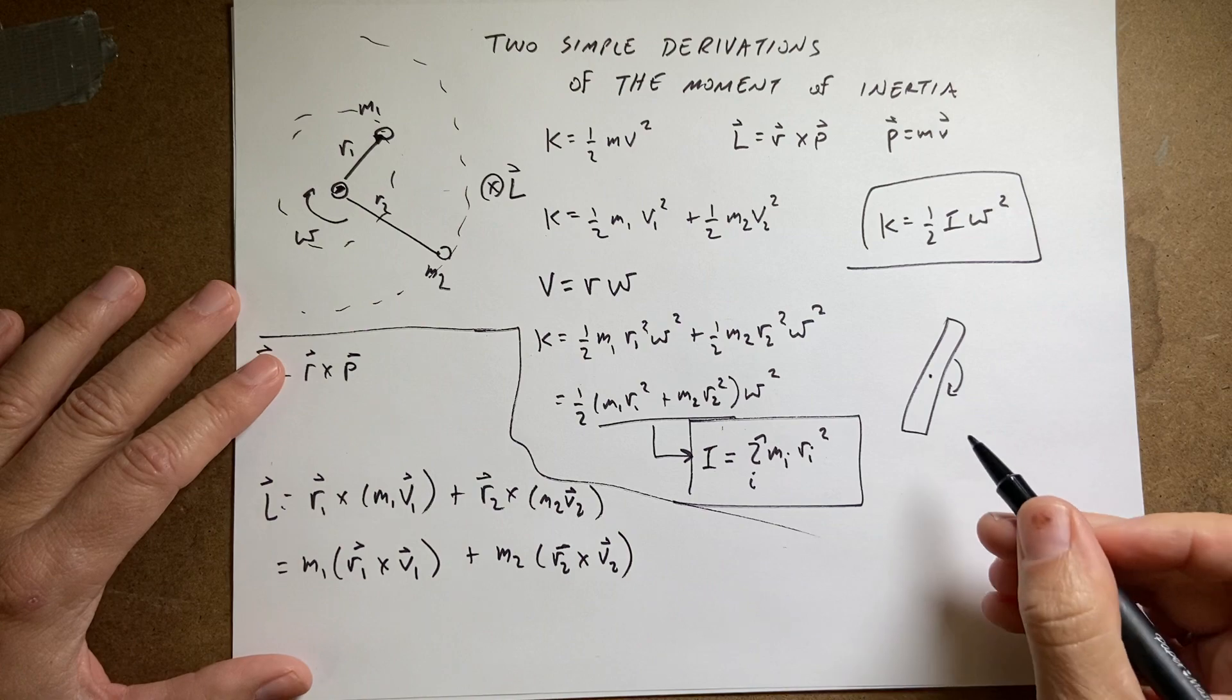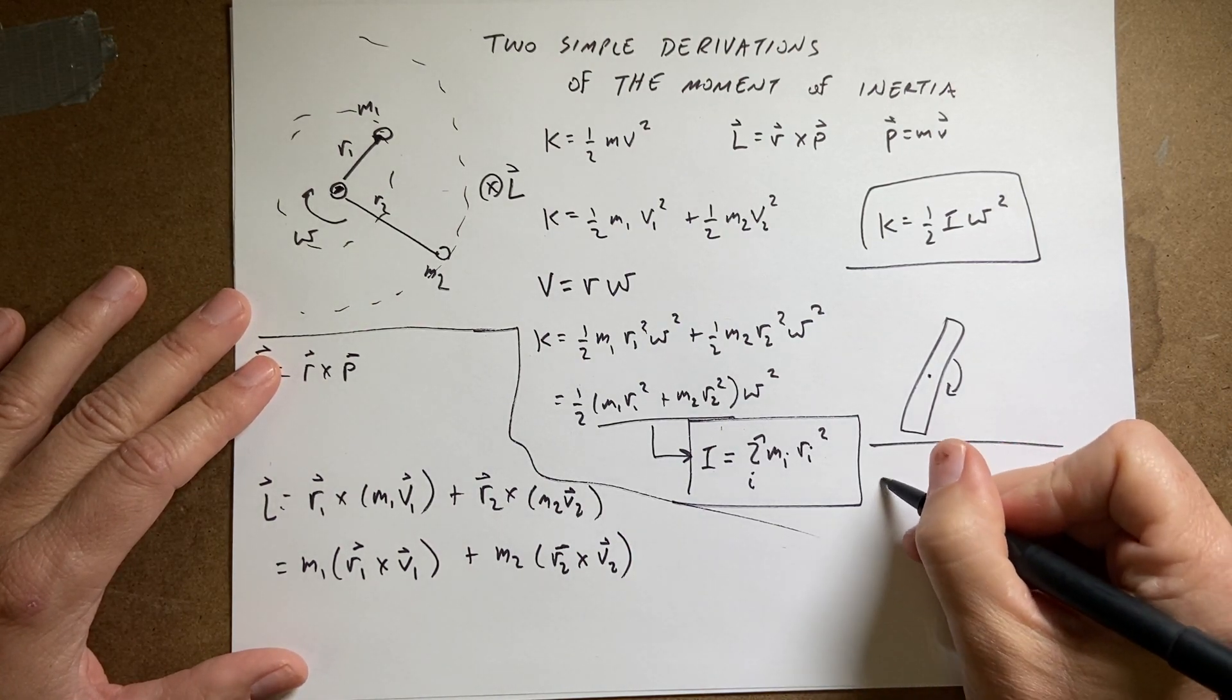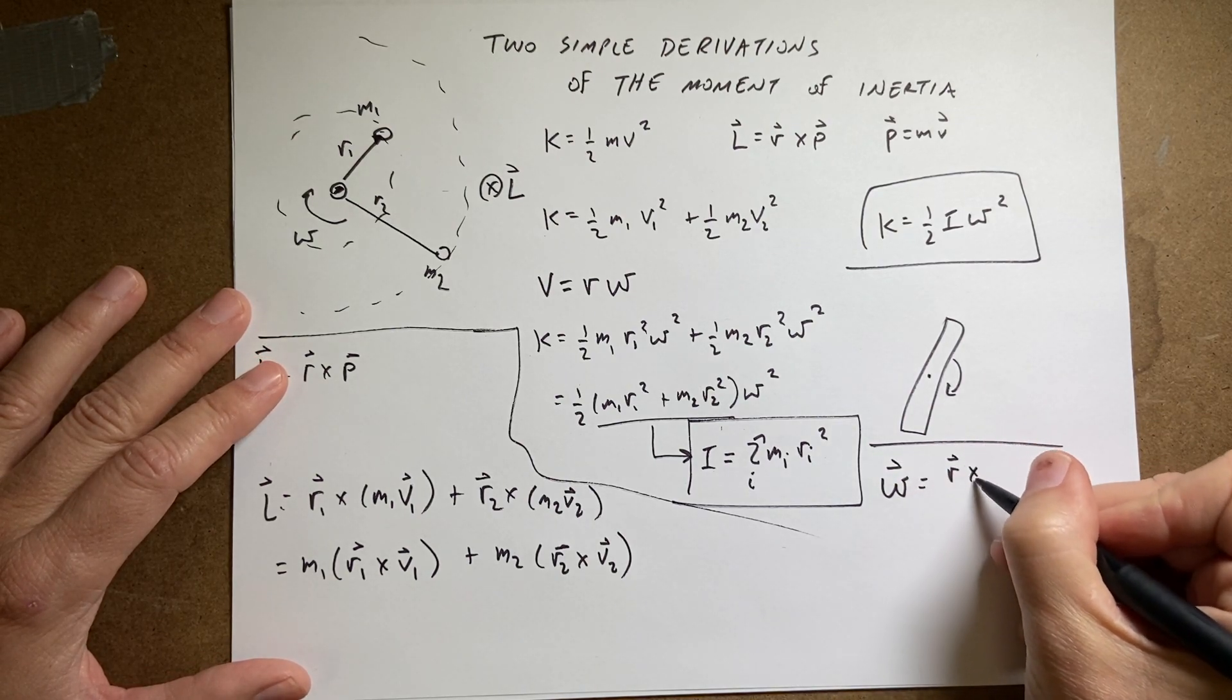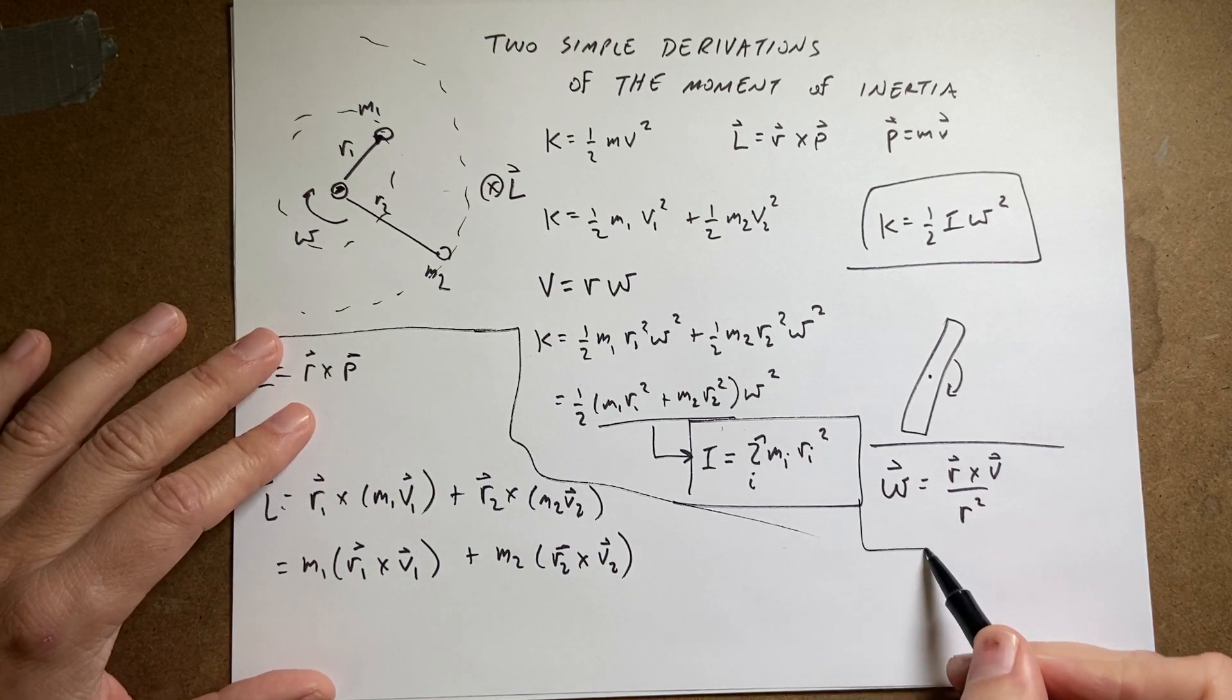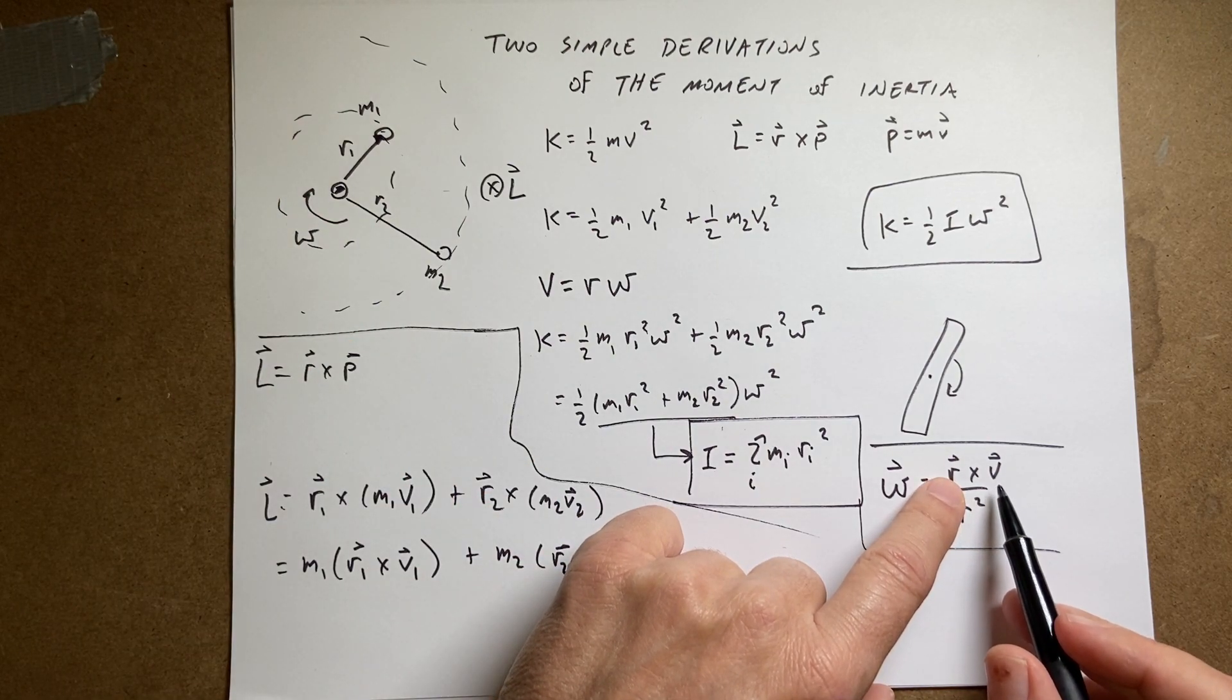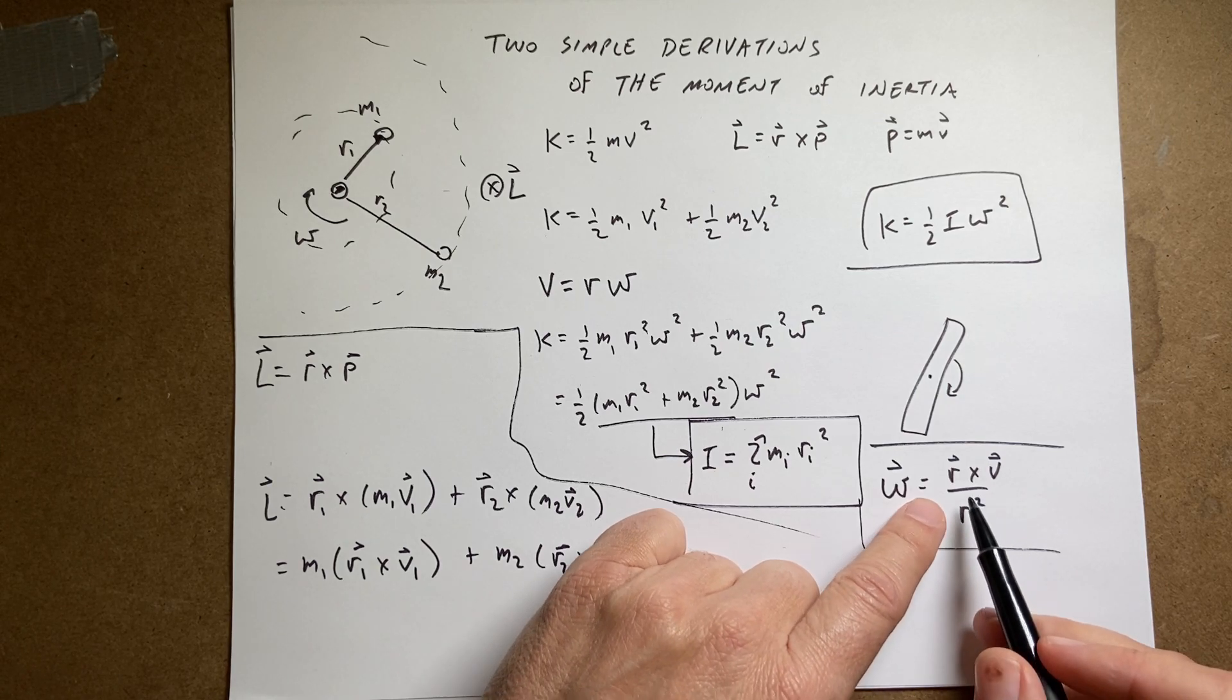Now here I can use the following relationship. I know that the angular velocity vector is defined as r cross v over r squared. I know that's a stretch. I didn't derive that. But you can imagine it. First of all, it has the right units of velocity of radians per second, because these cancel and the meters cancel.